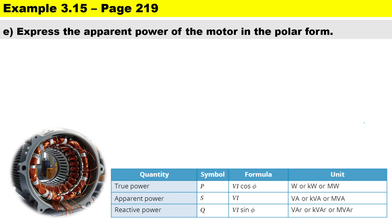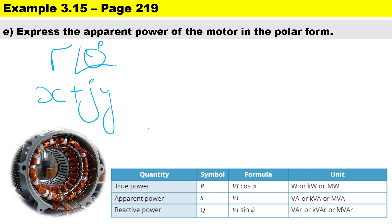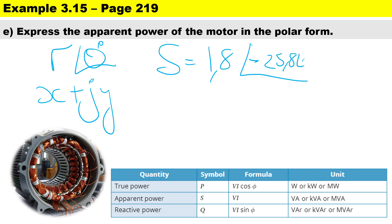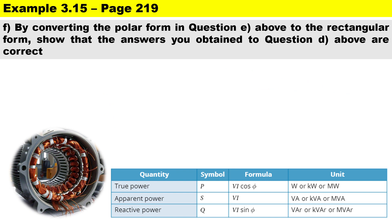The next question asks us to express the apparent power in polar form. As a reminder, polar form is r∠θ, while rectangular form is x + jy. So in polar form, our apparent power is S = 1.8∠−25.842° kVA — the negative sign because it is lagging.